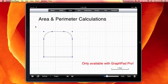With GraphPad Pro, users can calculate both the area and perimeter of closed shapes, as well as fill those shapes with color.